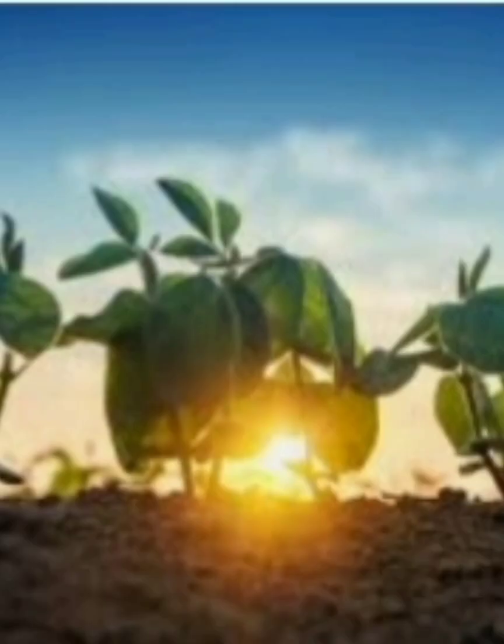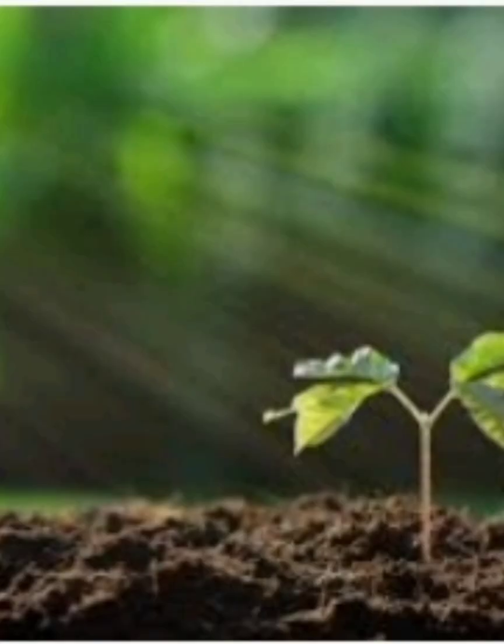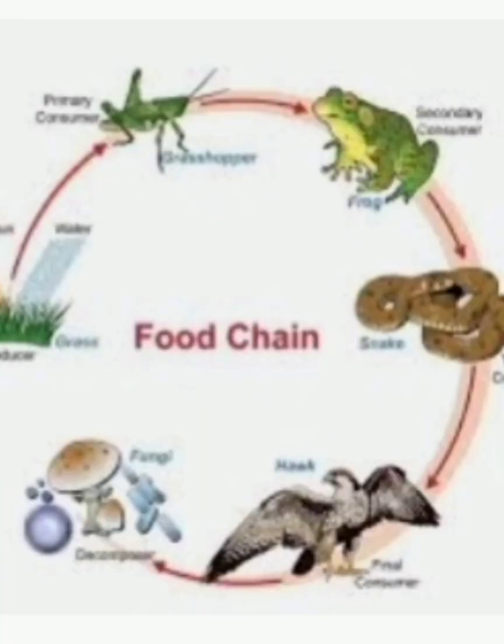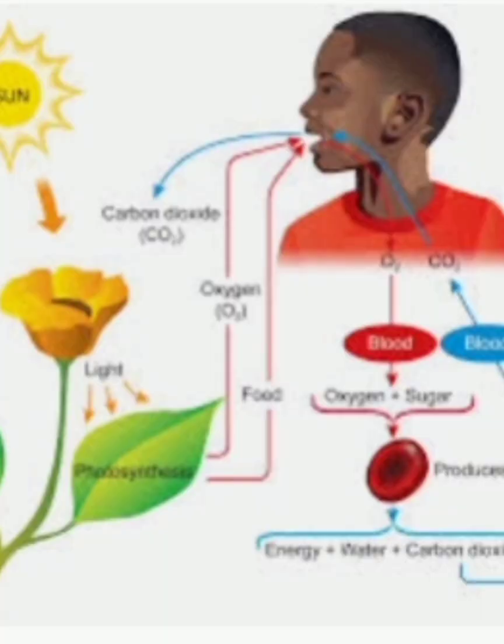The Sun radiates light and heat, or solar energy, which makes it possible for life to exist on Earth. Plants need sunlight to grow. Animals, including humans, need plants for food and the oxygen they produce.